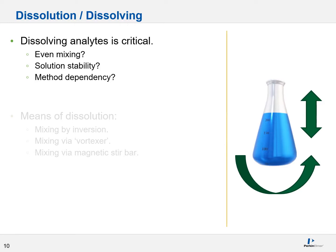Now let's talk about dissolution, or as I like calling it, dissolving stuff. Dissolving analytes is critical. You need to ensure that your analytes have been evenly mixed and evenly distributed. Otherwise, odds are your instrument will aspirate or analyze an over or under-concentrated part of the solution, giving you incorrect results. You need to consider solution stability as well, and method dependencies. There may be protocols regarding how to mix your solution, in which order to mix them, or how long to mix them. Now, there are a couple of means of dissolution. The easiest one is arguably simply mixing by inversion. Then you have mixing via what I call a vortexer. Finally, you can use a magnetic stir bar to completely dissolve your items.